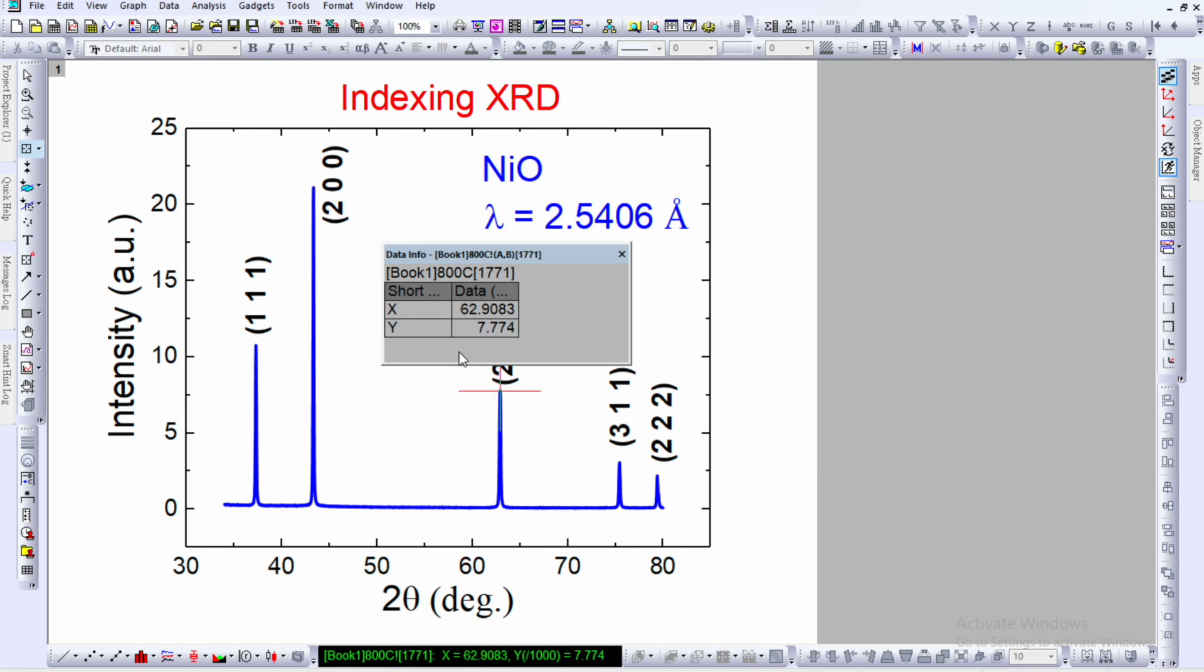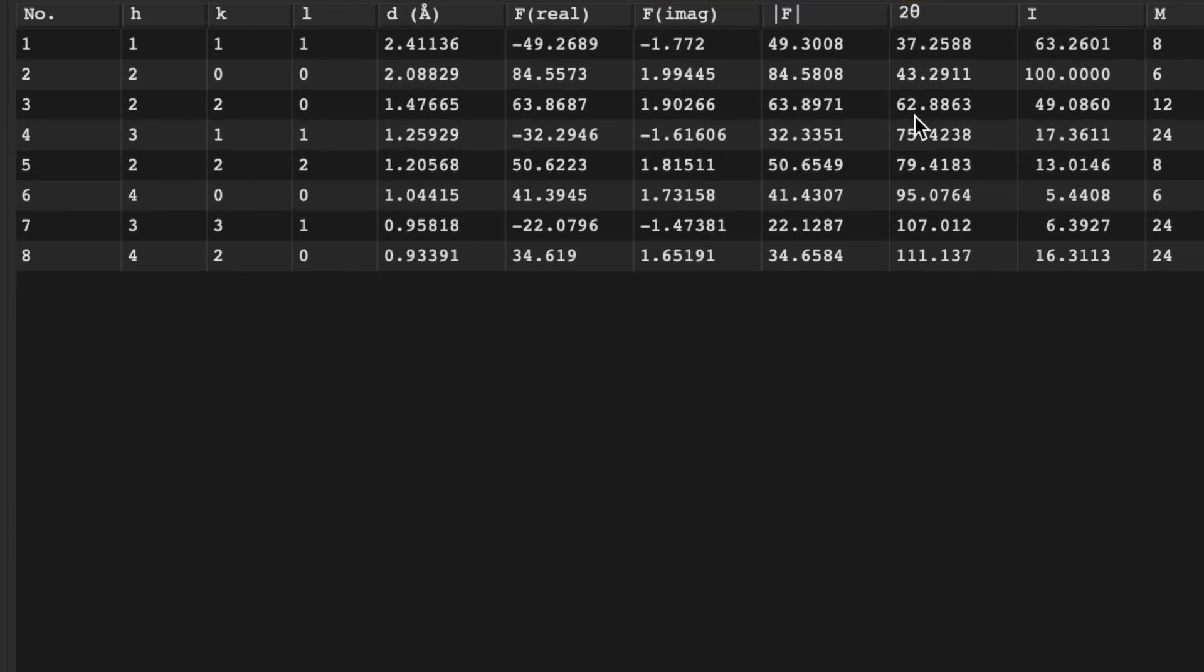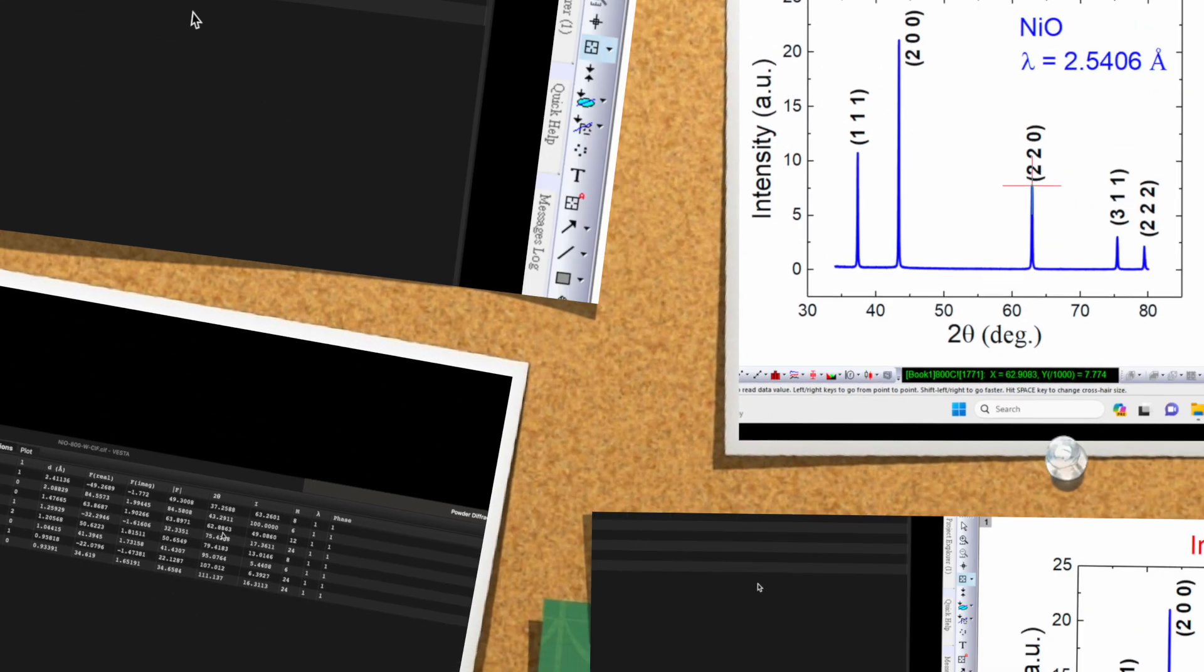Over here if you click, you can find 62.908 degrees. So 62.2 is close to this value—that's the 220 plane. So this way you can index your diffractogram.